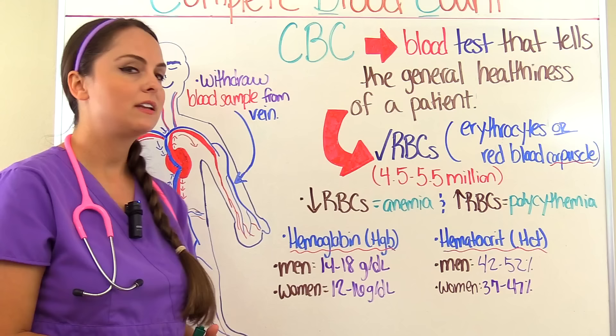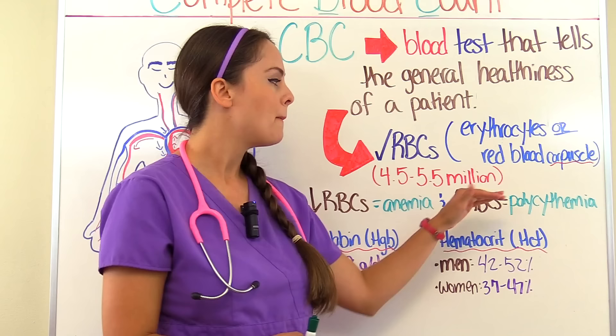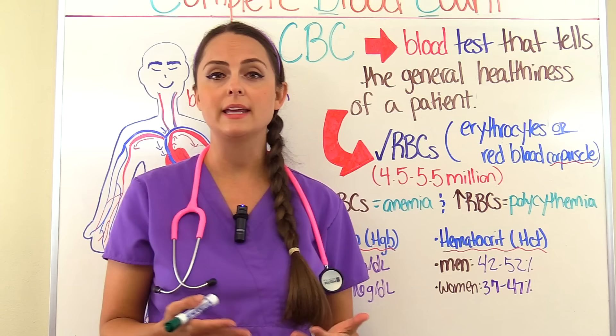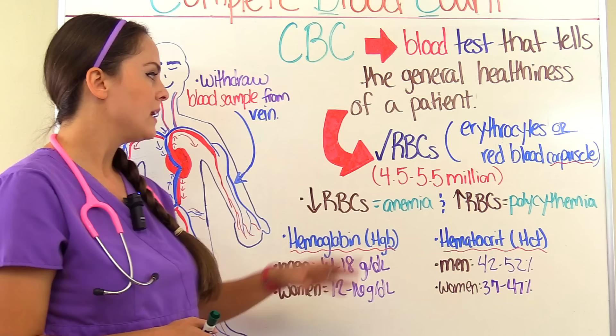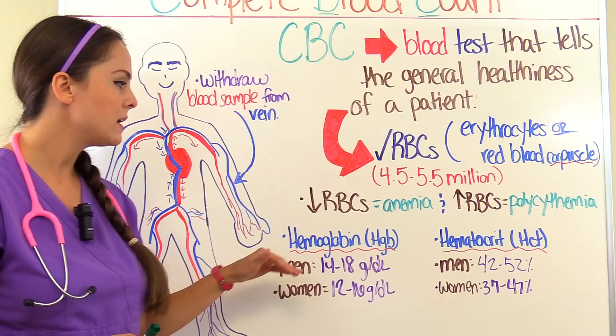Other causes of anemia include acute blood loss and hemorrhage. A high red blood cell count is termed polycythemia, and a cause of that could be a blood cancer where the bone marrow is producing too many red blood cells.